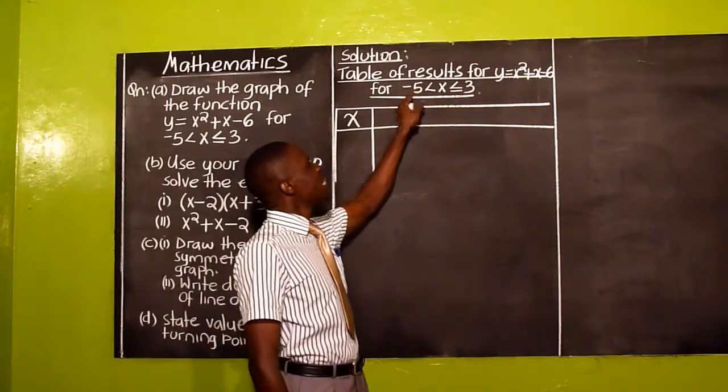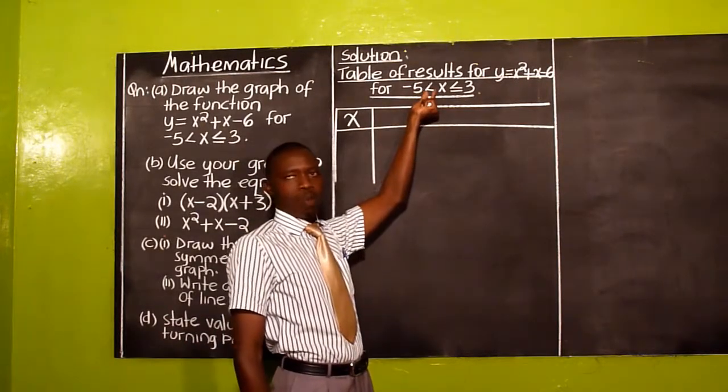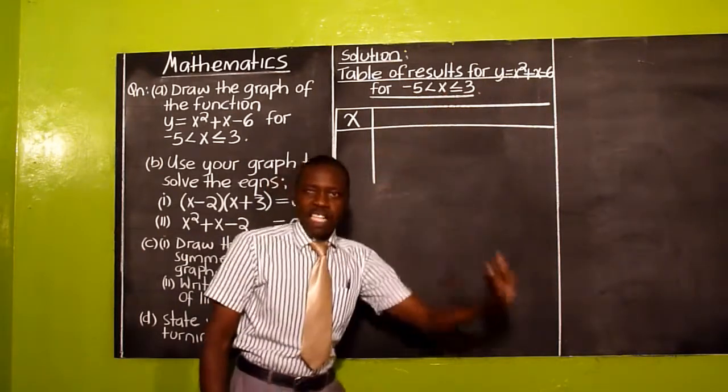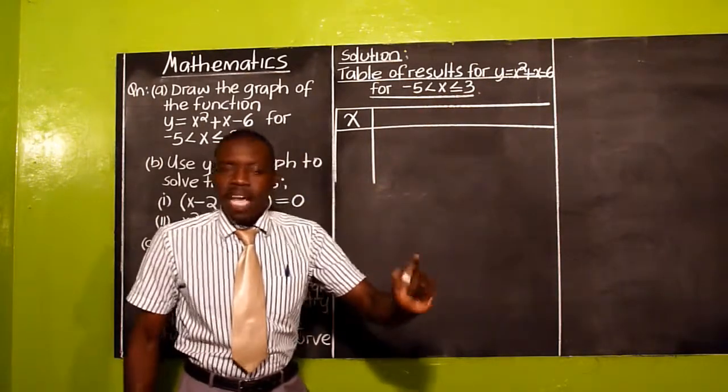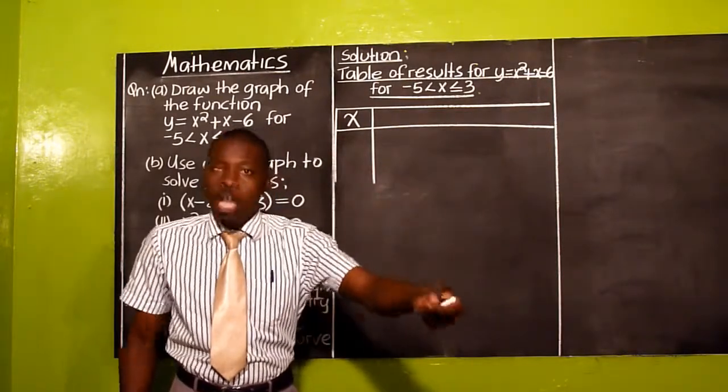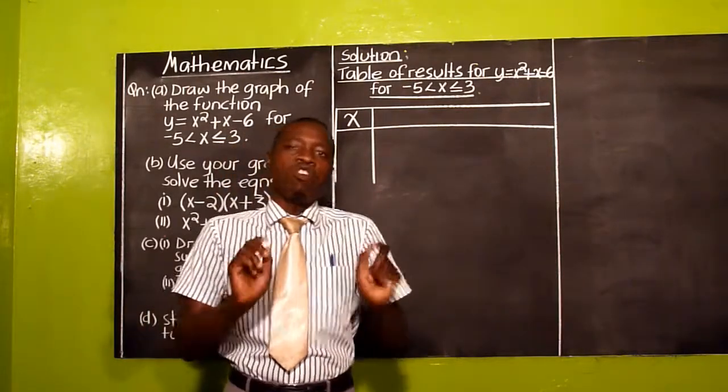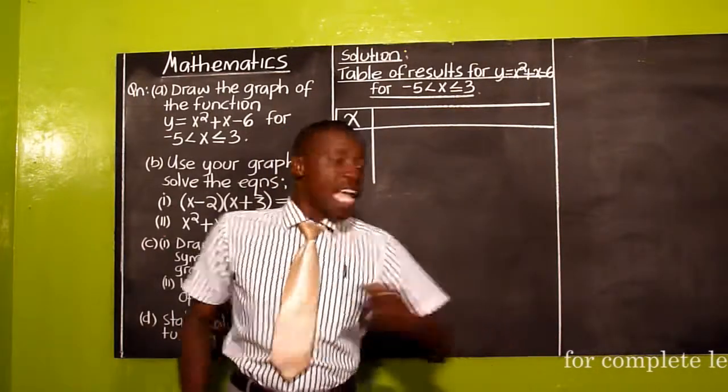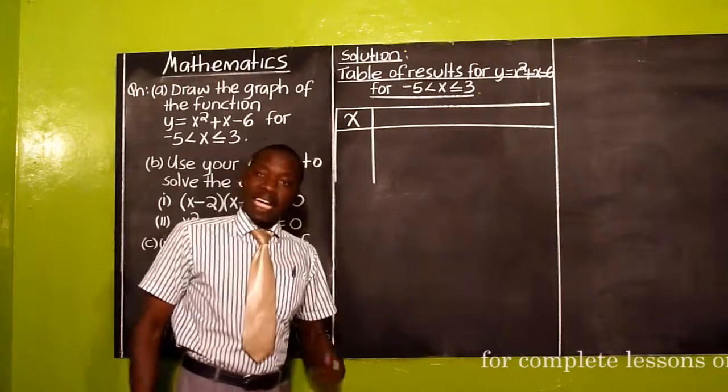They are telling us -5, there is one inequality symbol. -5 is less than X. If -5 is less than X, then it means that X is greater than -5, which means -5 is not a solution. We start from the next value, that is to say, -4.